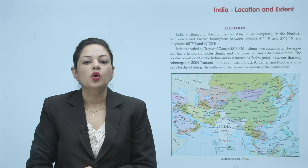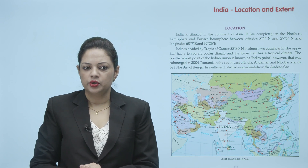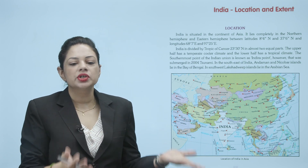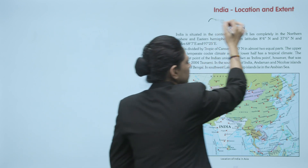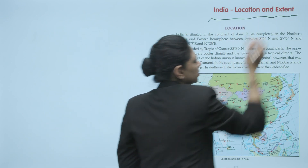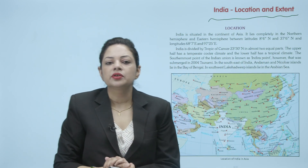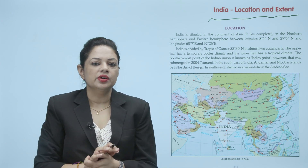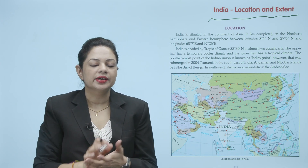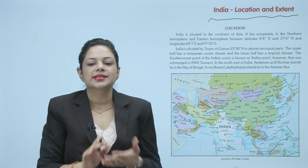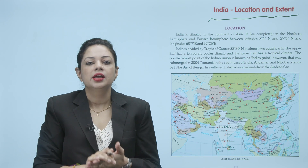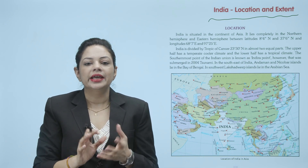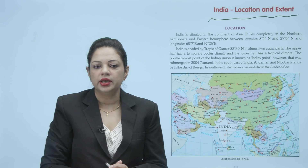Hello students, hope you all are doing good. Today we are doing a chapter named India Location and Extent. In this chapter we will read about the location of India, ki Asia mein jo India hai uski position kahan hai aur extent kitna hai, yani north se south aur west kitna area India cover karta hai.